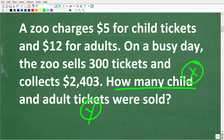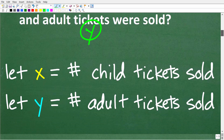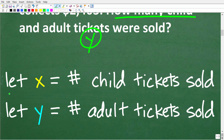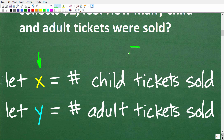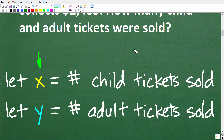This is the power of algebra — we can use variables to represent what we're solving for. Let x equal the number of child tickets sold, and let y equal the number of adult tickets sold. These are good habits, especially for algebra word problems: identify what your variables represent. We're solving for x and y, but we can't solve for variables unless we build an equation.